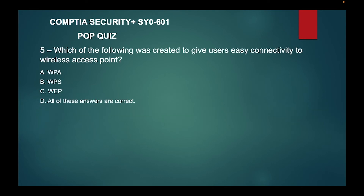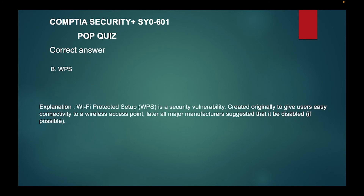Question five: which of the following was created to give users easy connectivity to a wireless access point? Is it A, WPA; B, WPS; C, WEP; or D, all of these answers are correct? The correct answer is WPS. Wi-Fi Protected Setup is a security vulnerability created originally to give users easy connectivity to a wireless access point.